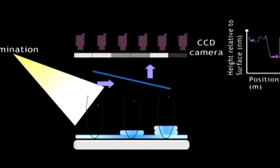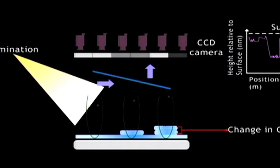Binding of the target to the immobilized biomolecules further increases the optical path difference, and it is shown as a shift in the spectral reflectivity. The spectral reflectance imaging biosensor or SRIB therefore serves as a useful tool for high throughput real time detection of biomolecular interactions.